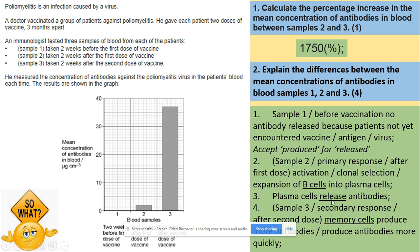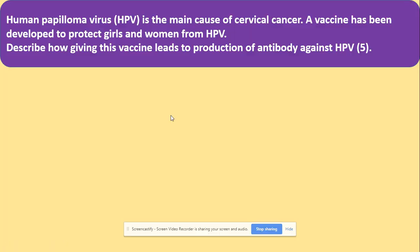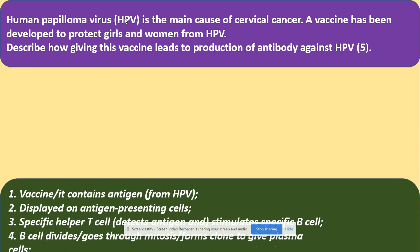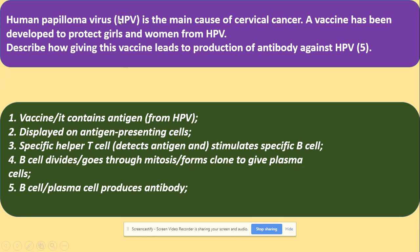Here is an application question about a vaccine developed to protect girls and women from HPV: describe how giving the vaccine leads to production of antibodies. The antigen comes from the HPV virus and must be included in your model answer. The vaccine contains the antigen from this virus displayed on an antigen-presenting cell — a B cell or macrophage. Specific T helper cells stimulate specific B cells, which divide to produce antibodies faster. That's everything about vaccines — see you later.